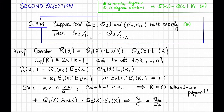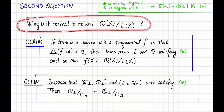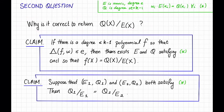So that proves the second claim. Now let's return to the second question we were trying to answer: why is it correct to return Q(x) divided by E(x)? These two claims explain why. The first claim says that if there is some polynomial f of degree at most k-1 which is close to w, then there's going to be some E and Q with the right ratio. The second claim says that any E and Q that we find are going to have the same ratio. So since at least one of them has the right ratio, they all must have the right ratio. No matter what E and Q we find — and we will find at least one by the first claim — we will get the right answer. This explains why the Berlekamp-Welch algorithm is correct.